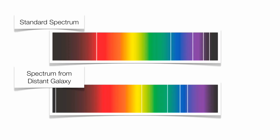Looking at the spectrum from a distant galaxy, the spacing of the lines is identical, but the spectrum is shifted to the red end. This is what we call a Doppler red shift.